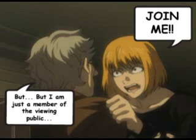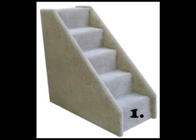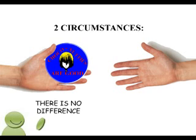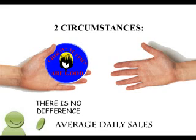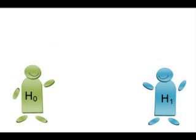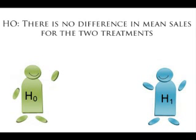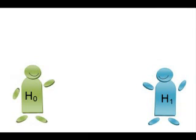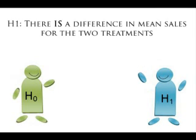She asks you to help her do the analysis. The first step is to decide on the hypotheses. There are two different circumstances, sometimes known as treatments: offering a sticker and not offering. The null hypothesis is that there is no difference in the sales for the two treatments. The statistic of interest is the mean or average value of daily sales. So the null hypothesis, H-nought, is that there is no difference in mean sales for the population for the two treatments. The alternative hypothesis, written H-1 or H-A, is that there is a difference in mean sales for the population for the two treatments.